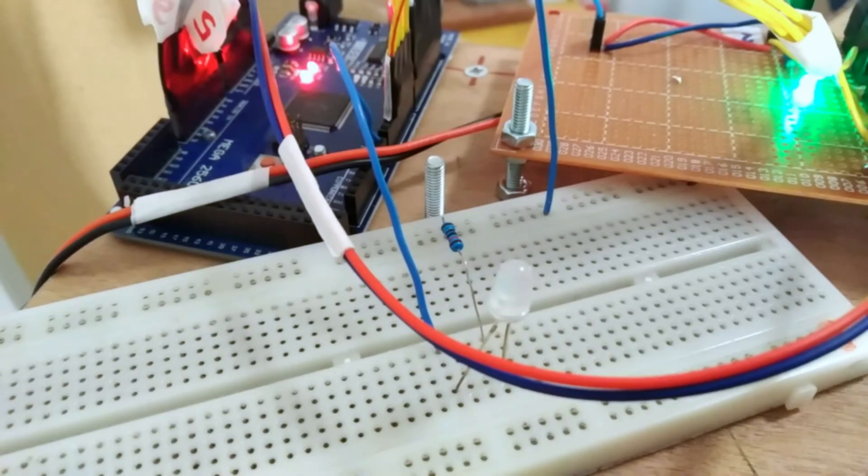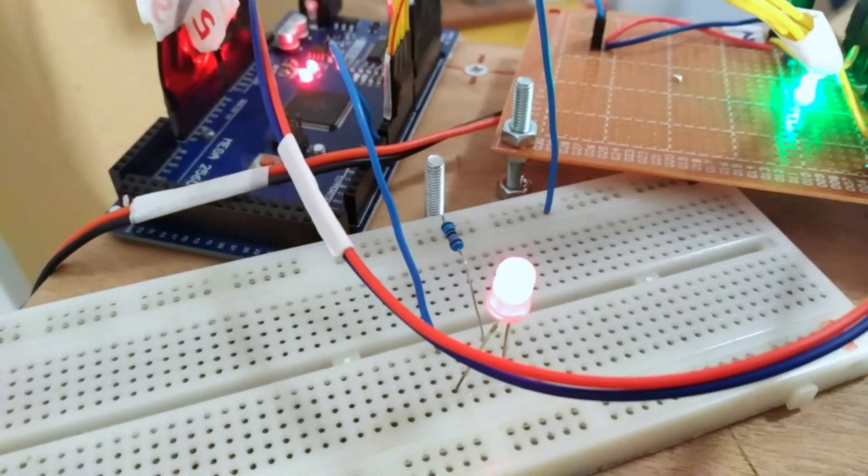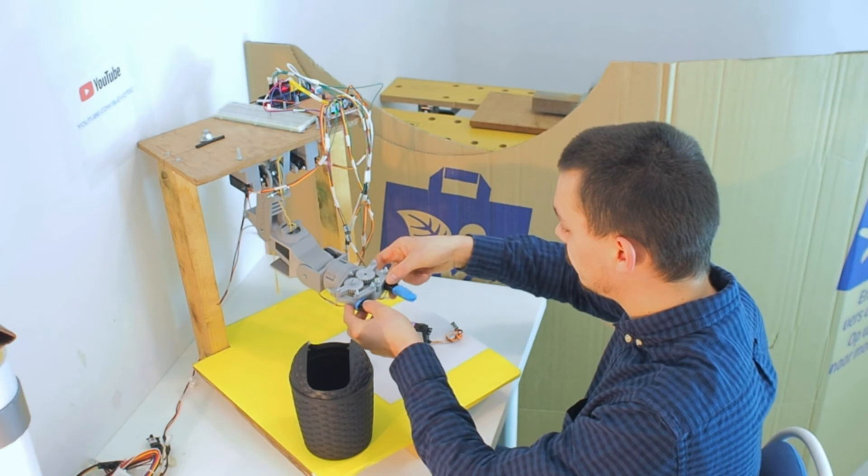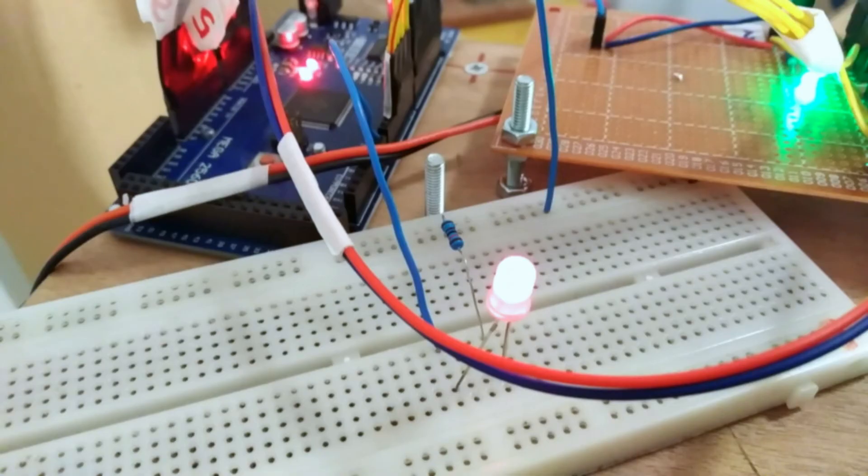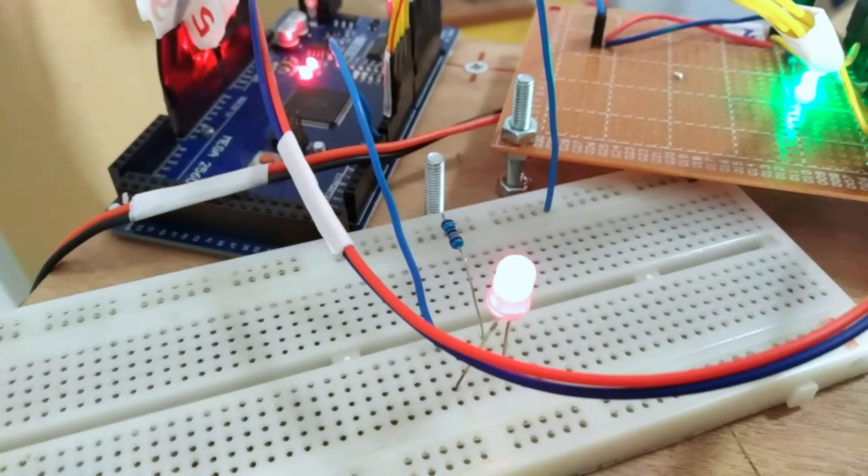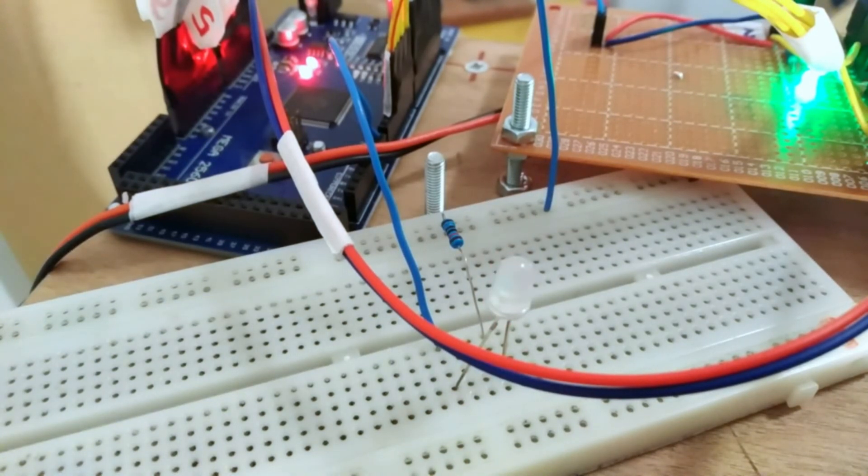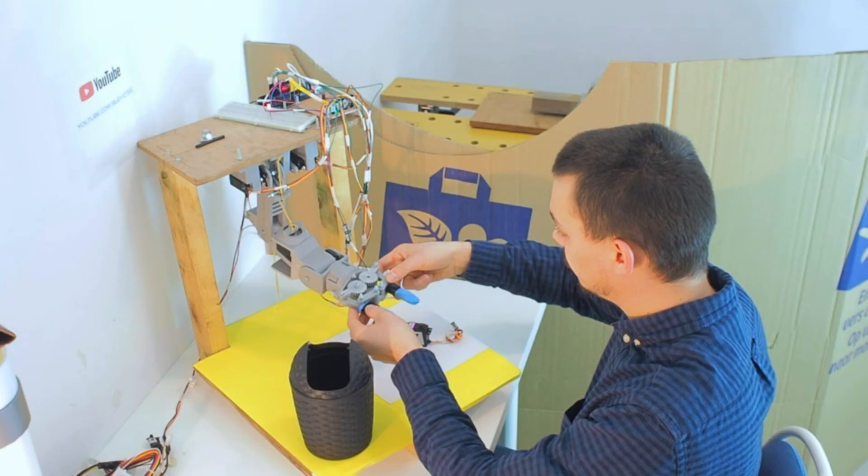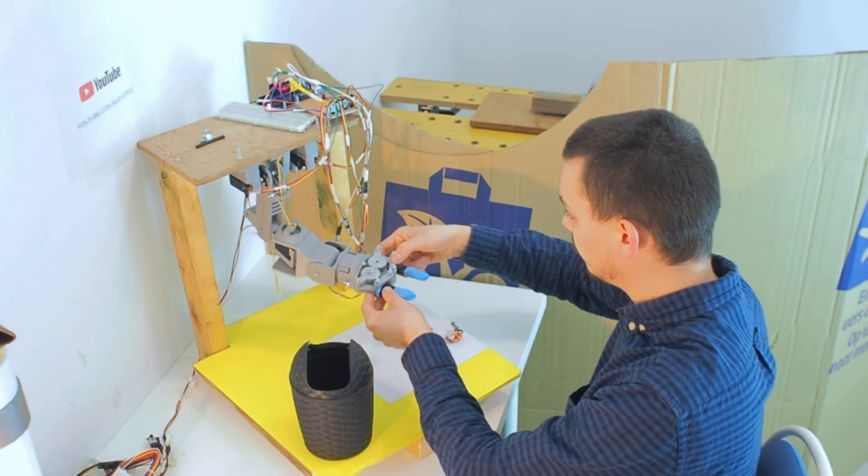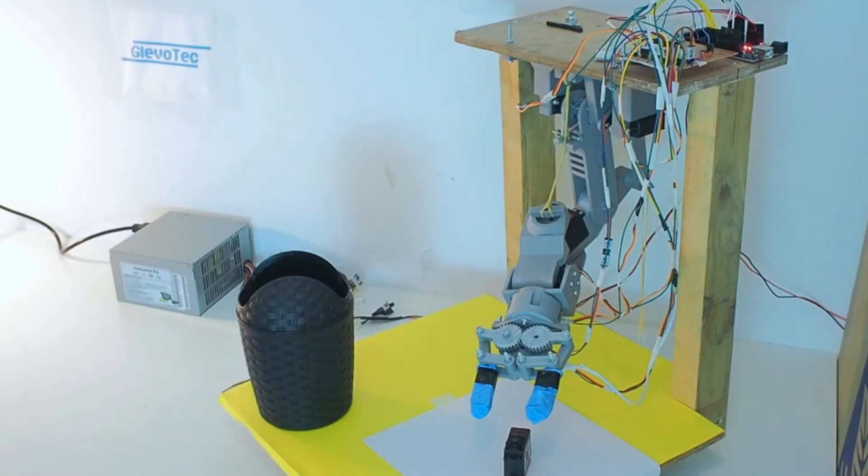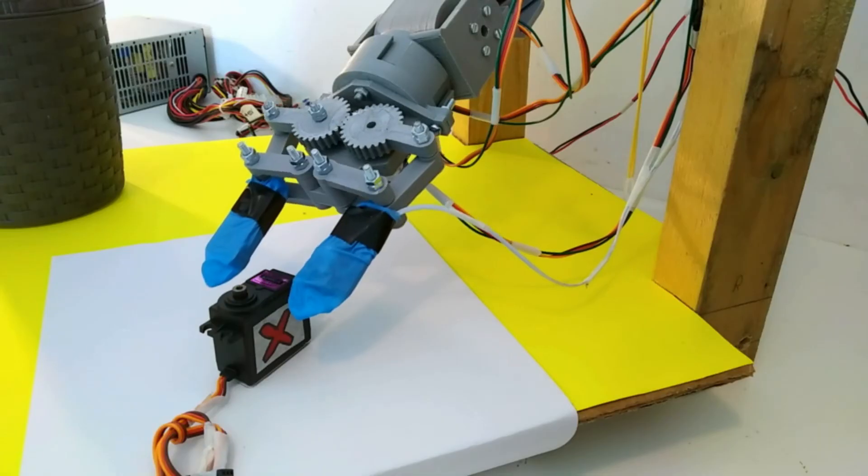Firstly the LED will light up for a certain amount of time. This means you're free to move the arm to a position. When the time is almost out it will blink a few times to tell you to stop moving. The LED goes off and gives a few short blinks to confirm saving the current position. Then the cycle repeats and you can move the arm to a new position. This goes on until you have programmed all the steps. The amount of steps can be set in the code.